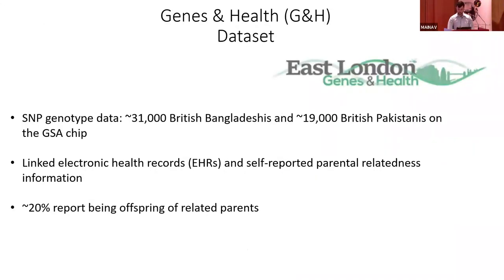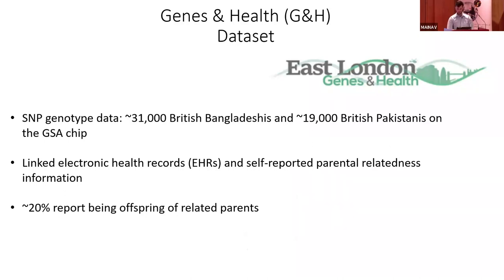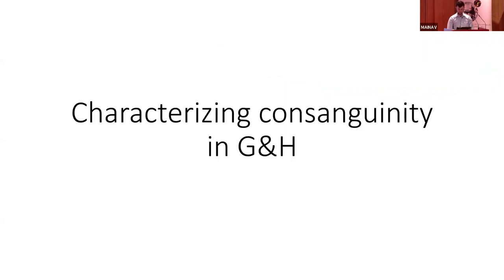I will discuss results from two datasets: UK Biobank and Genes and Health. Genes and Health is a population-based cohort of British Pakistanis and Bangladeshis, primarily recruited from East London. There are approximately 50,000 individuals, with 60% being Bangladeshi and 40% Pakistani. This cohort has linked electronic health records, self-reported parental relatedness information, and about 20% of individuals reported having related parents.